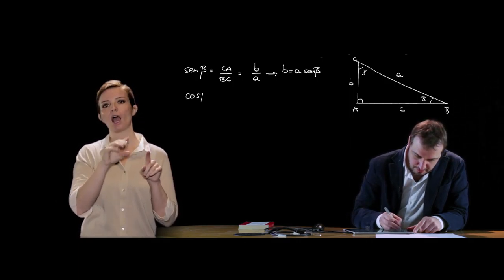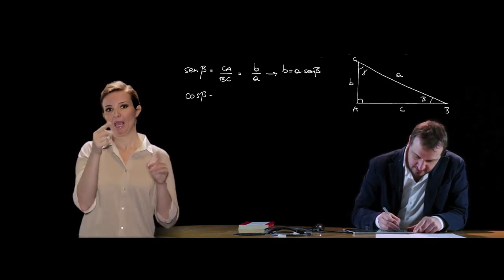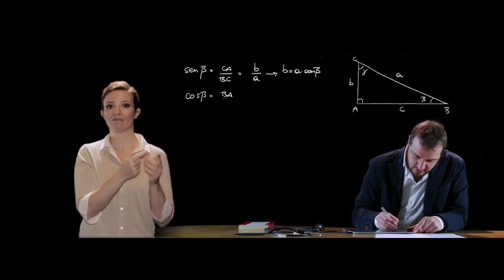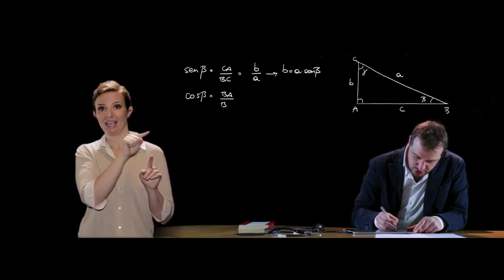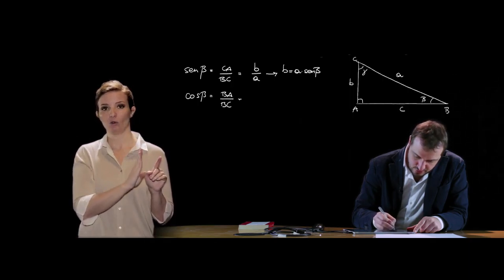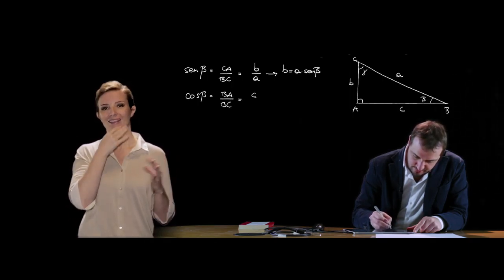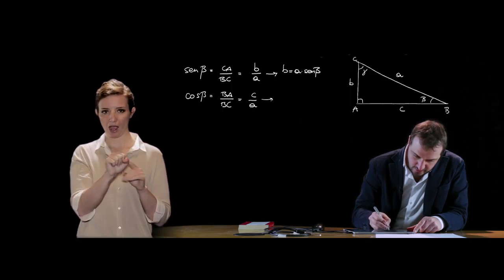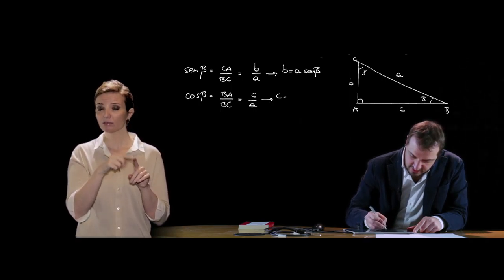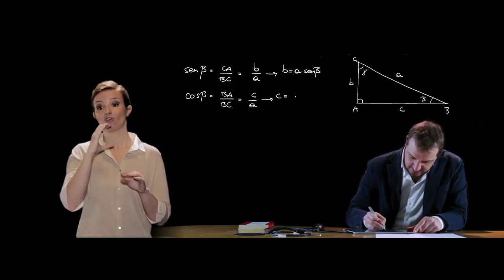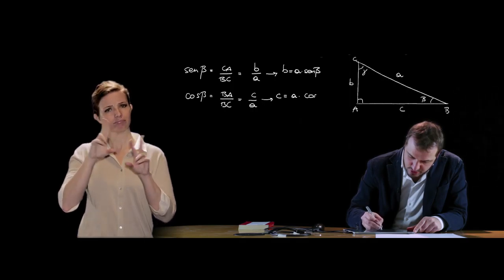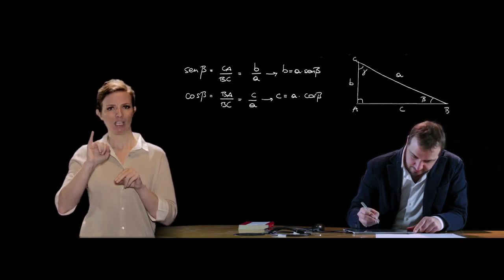Analogamente, il coseno di β, per definizione, è pari a BA/BC, ossia è pari a C/A. E quindi possiamo scrivere che C (cateto) è uguale ad A (ipotenusa) per il coseno di β.